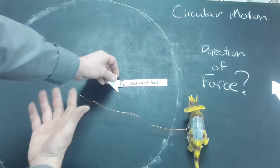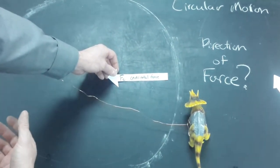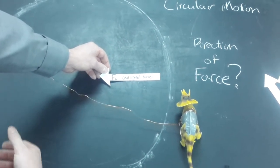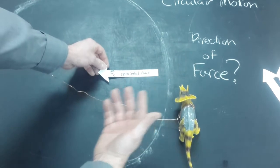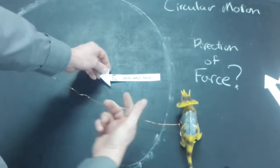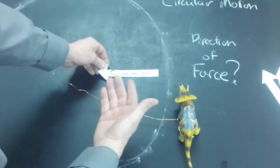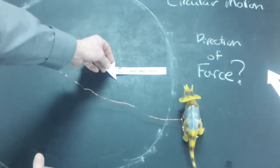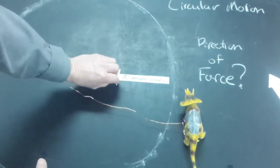Second question we asked, which way is the acceleration on the dinosaur? Force is a vector quantity. Acceleration is also a vector quantity. F equals mass times acceleration. Both are vector quantities. Obviously, if the force is directed there and acceleration and force are related, acceleration or centripetal acceleration also has to be directed towards the center.